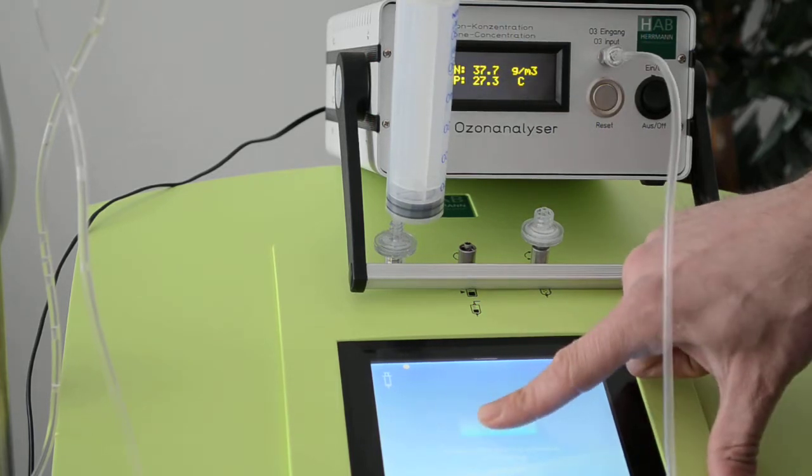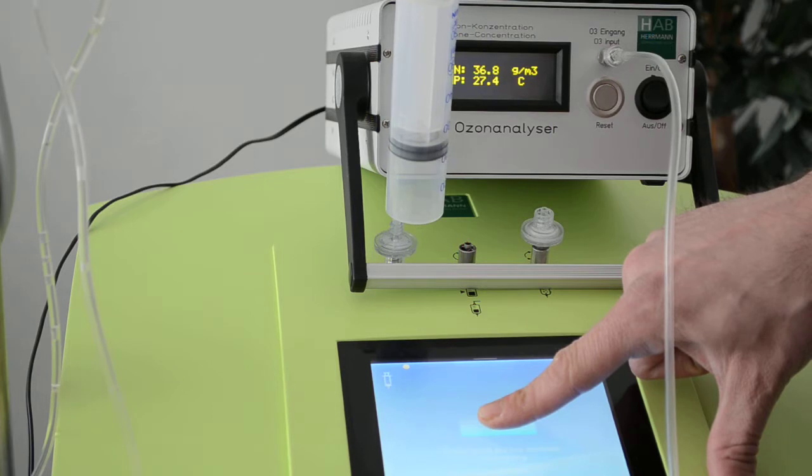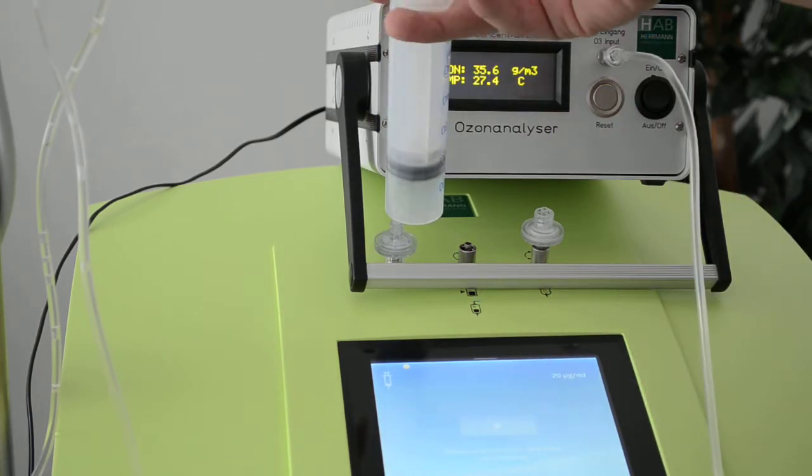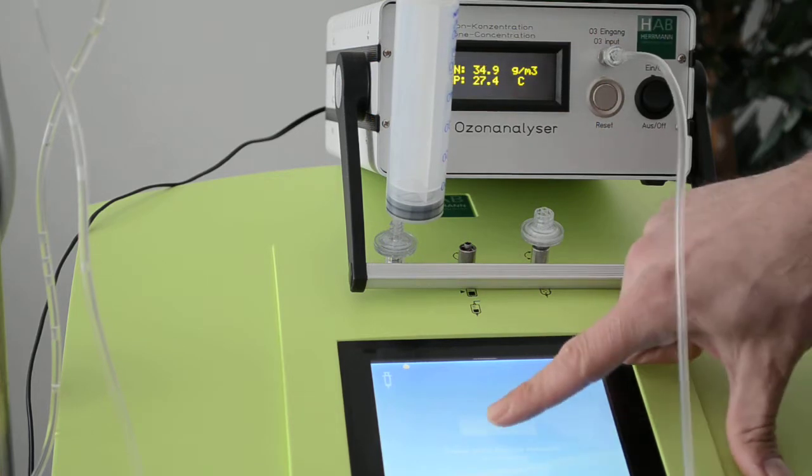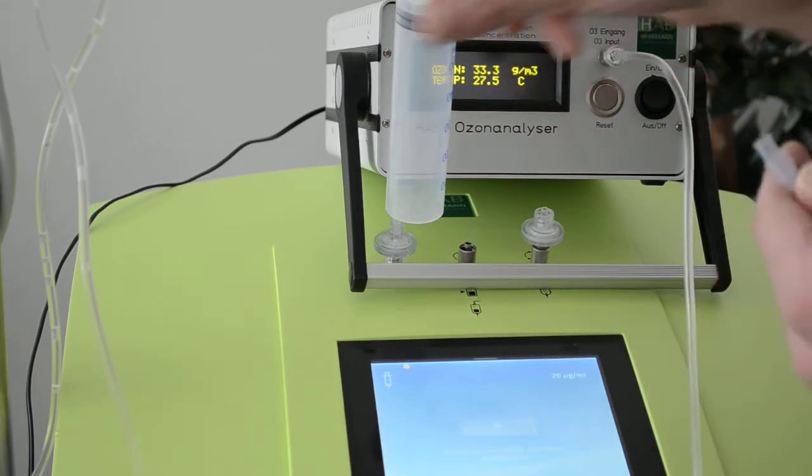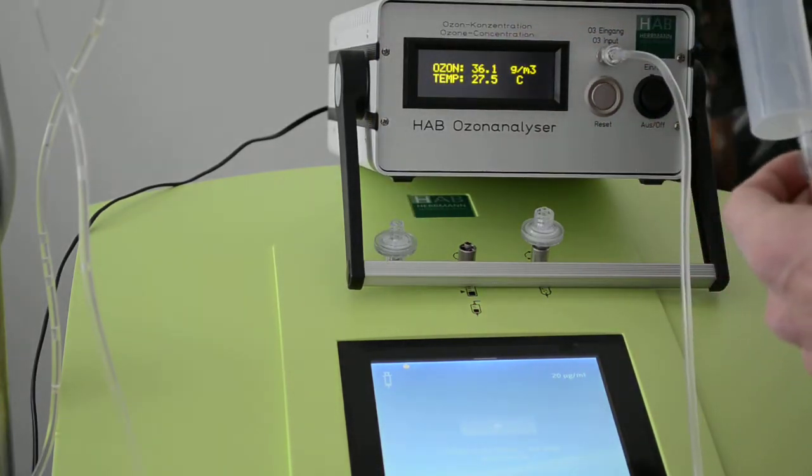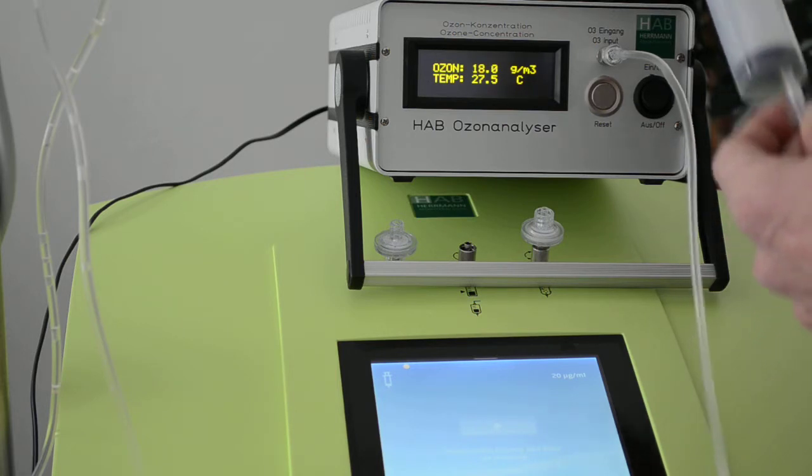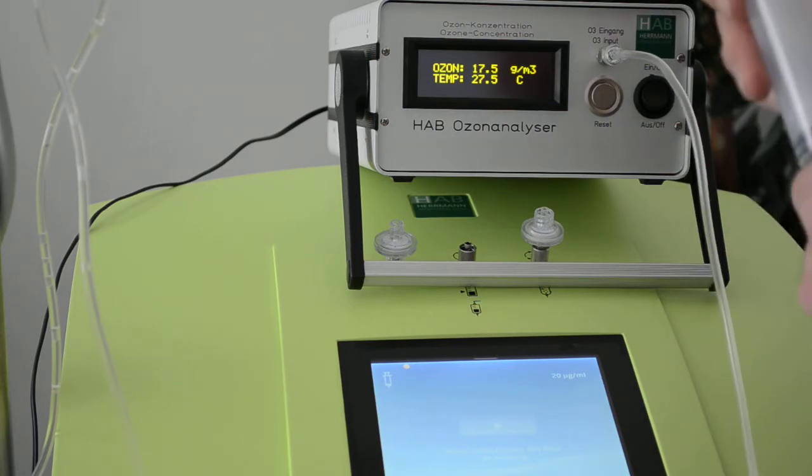We fill the first syringe and flush it. We take the second syringe. Now I take the syringe again and press it into the analyzer. 18.4, which is still in the tolerance.